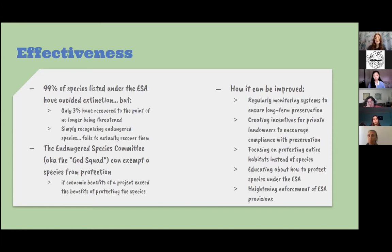There are some issues associated with the Endangered Species Act. The Endangered Species Committee, also known as the God Squad, can exempt a species from protection — for example, if the economic benefits of a certain project or development exceed the benefits of protecting that species. That limits the ability to protect certain species. There are probably lots of flaws we could discuss, but we have a list of ways we think the ESA could be improved.